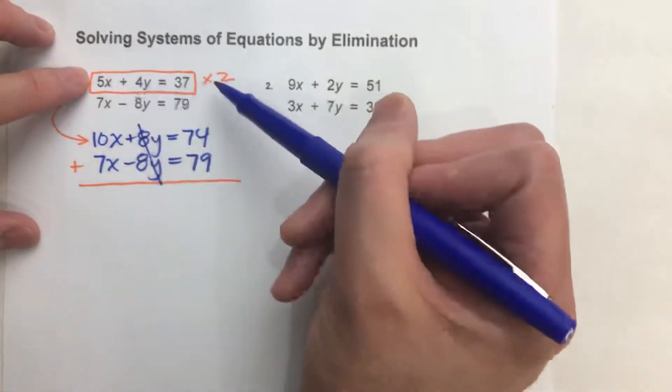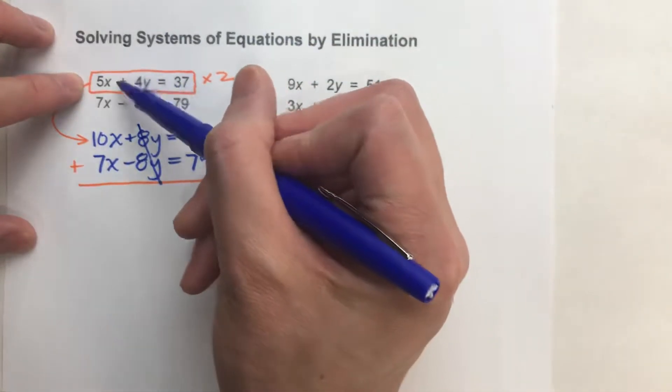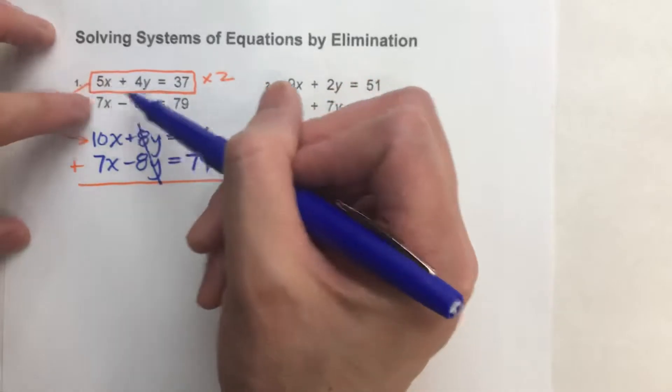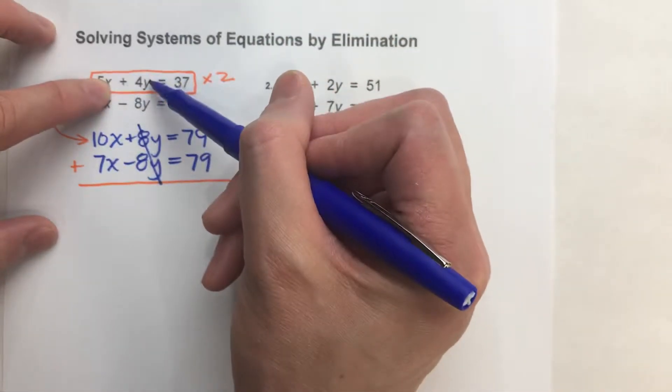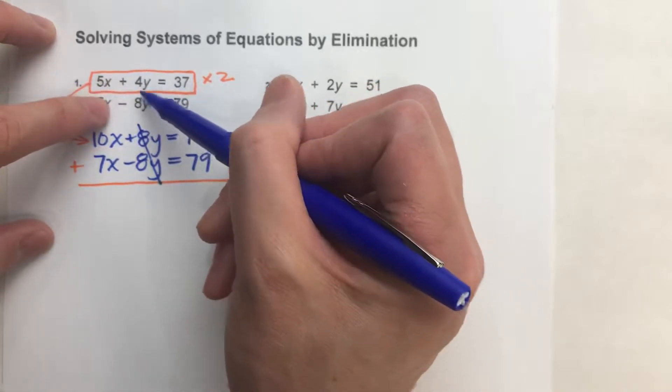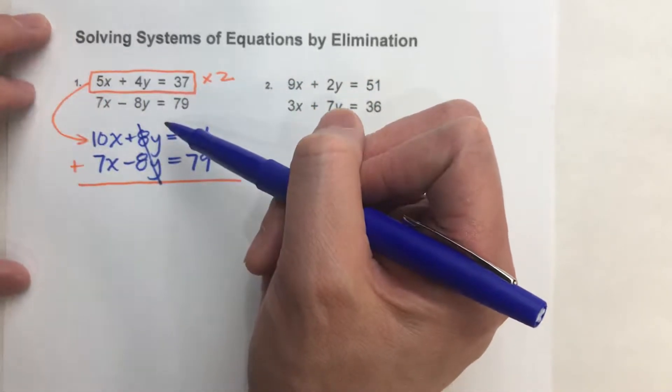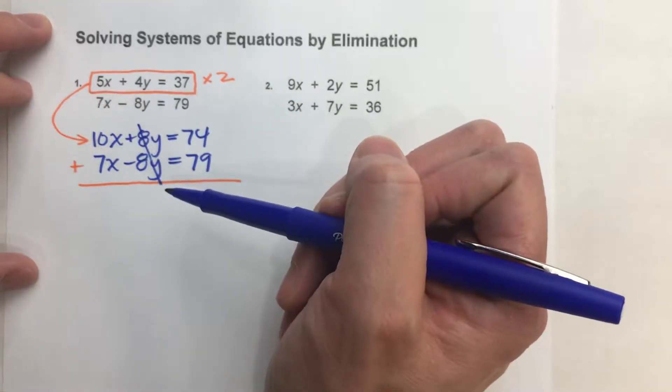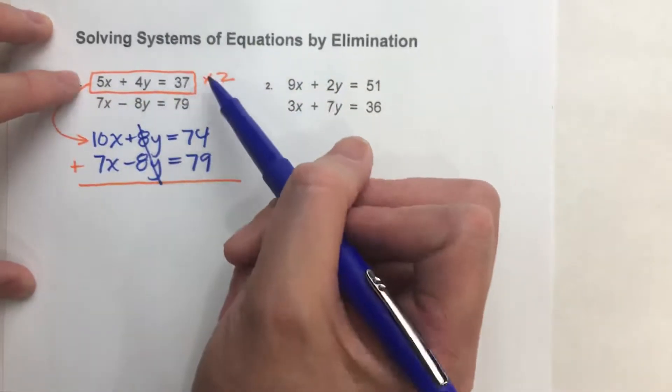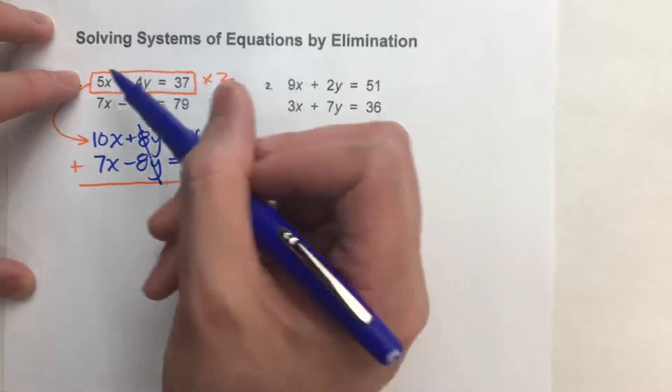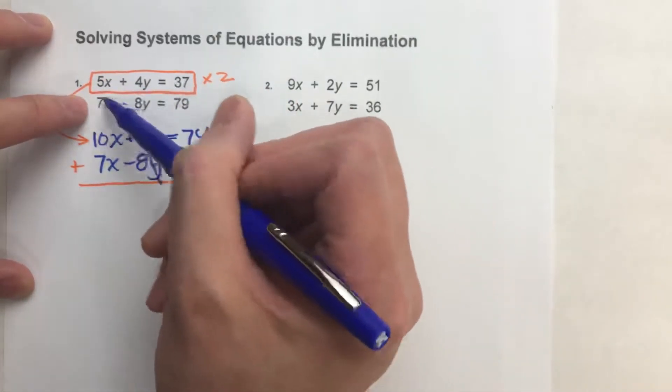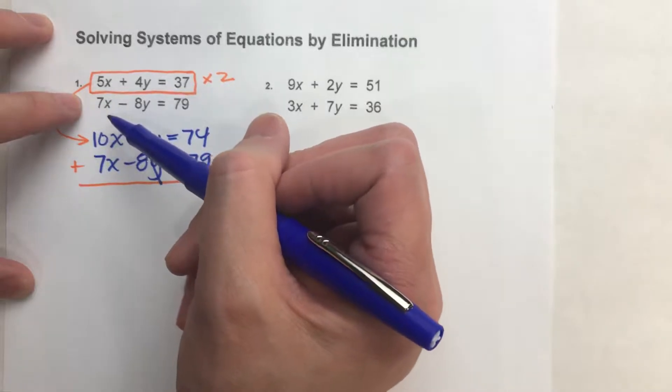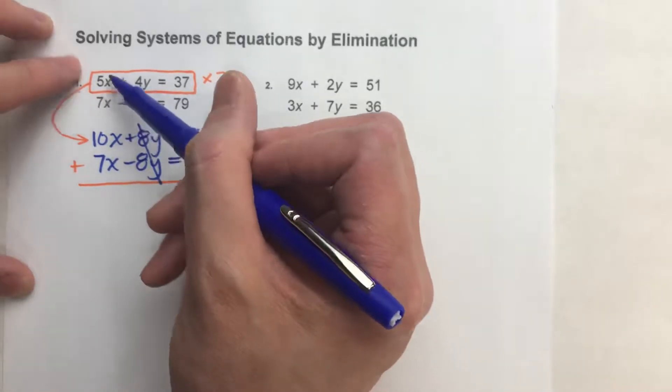So that was my strategy on that first step is I looked at the x's and I looked at the y's and I thought, if I multiply this positive 4y by 2, I get positive 8y, which will eliminate my y's because I've got negative 8y on the bottom. And notice, I can't really do that with the x's. There's no easy number that I can multiply 5x by to get 7x. And there's nothing I can multiply 7x by, well, at least not an easy number, to get 5x.